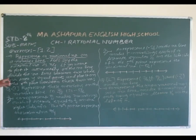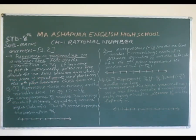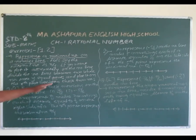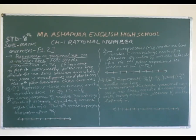First of all, divide the number line between the two whole numbers into y equal parts, and plot it on the x-th part. Represent these numbers on the number line.